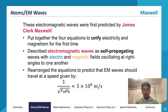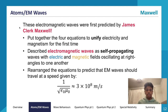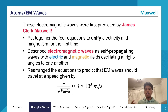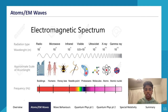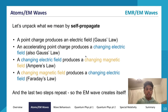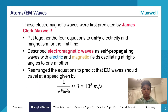Electromagnetic waves were first predicted by James Clerk Maxwell — his name is in red, so it can be tested. He put together four equations to unify electricity and magnetism for the first time. You don't need to write out the four equations; you just need to know that he unified electricity and magnetism through them.